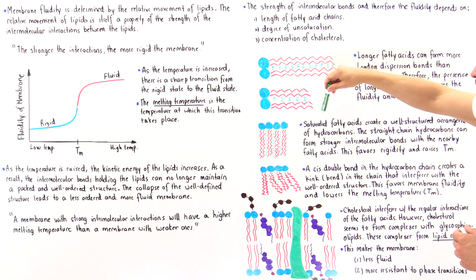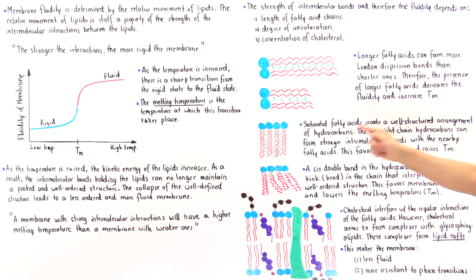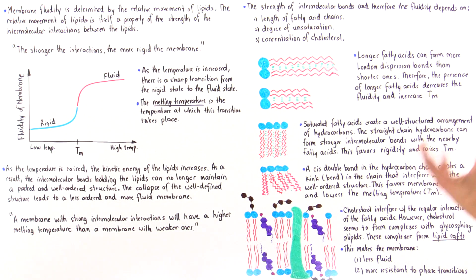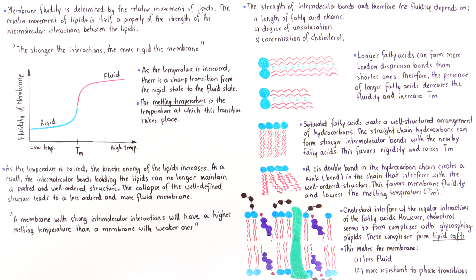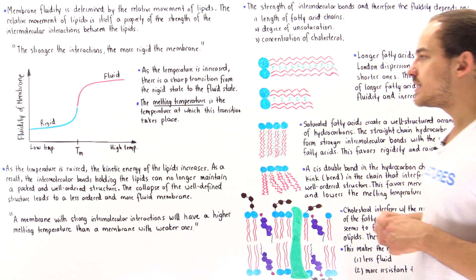Saturated fatty acids create a well-structured arrangement of hydrocarbon chains, and these straight-chain hydrocarbons can form stronger and more extensive intermolecular bonds with nearby fatty acids. This favors rigidity — it decreases fluidity and raises the melting temperature.